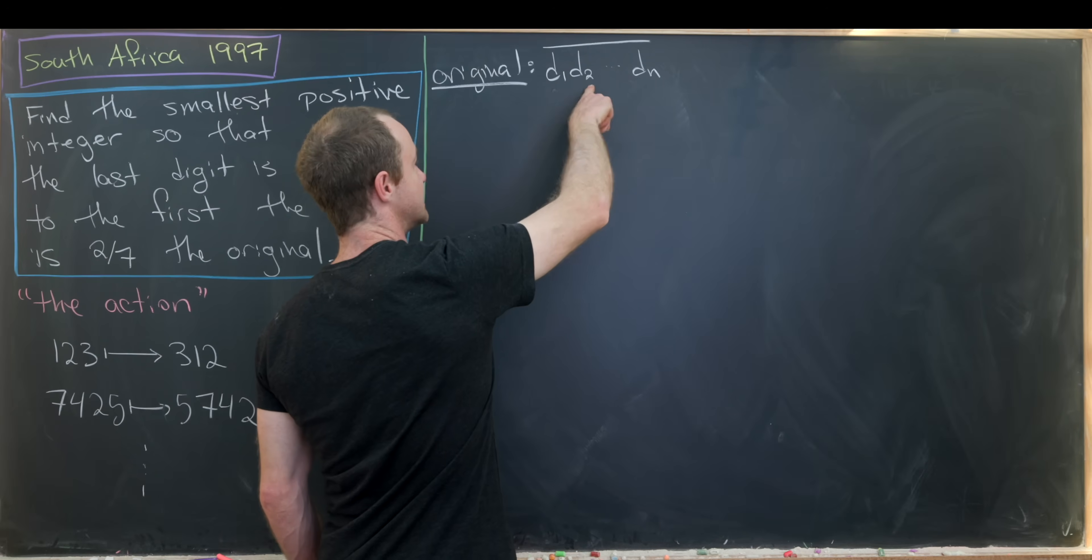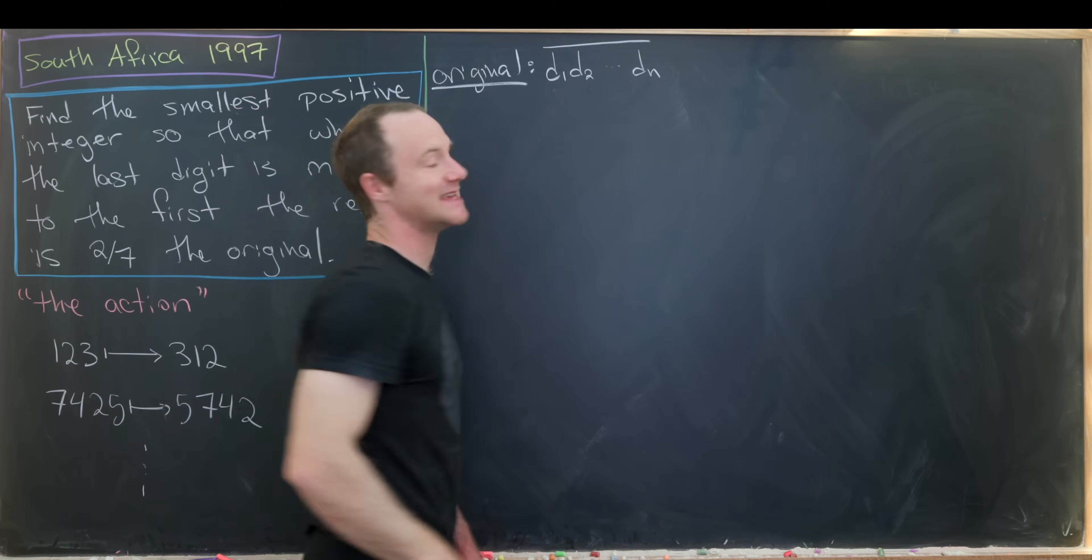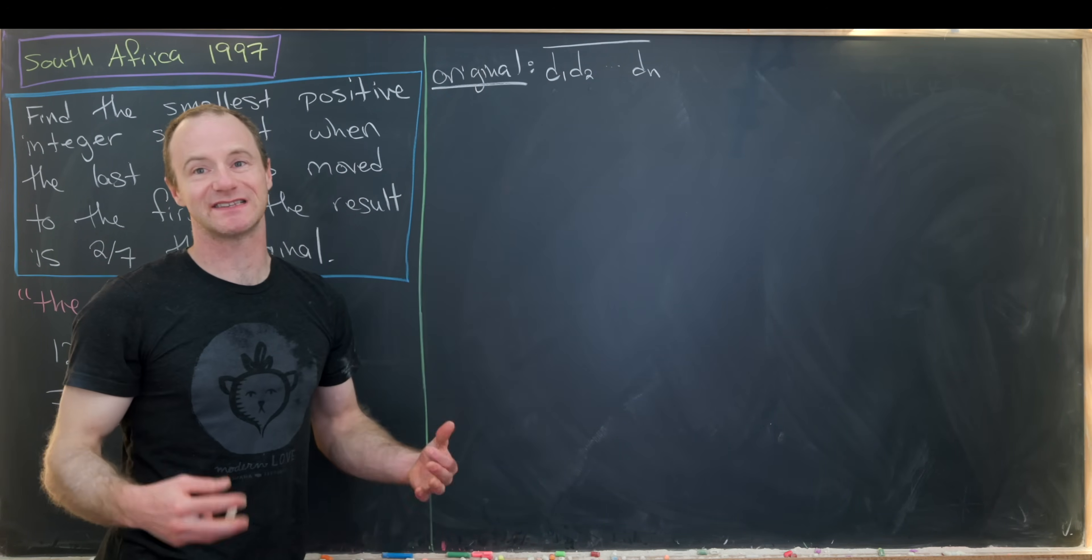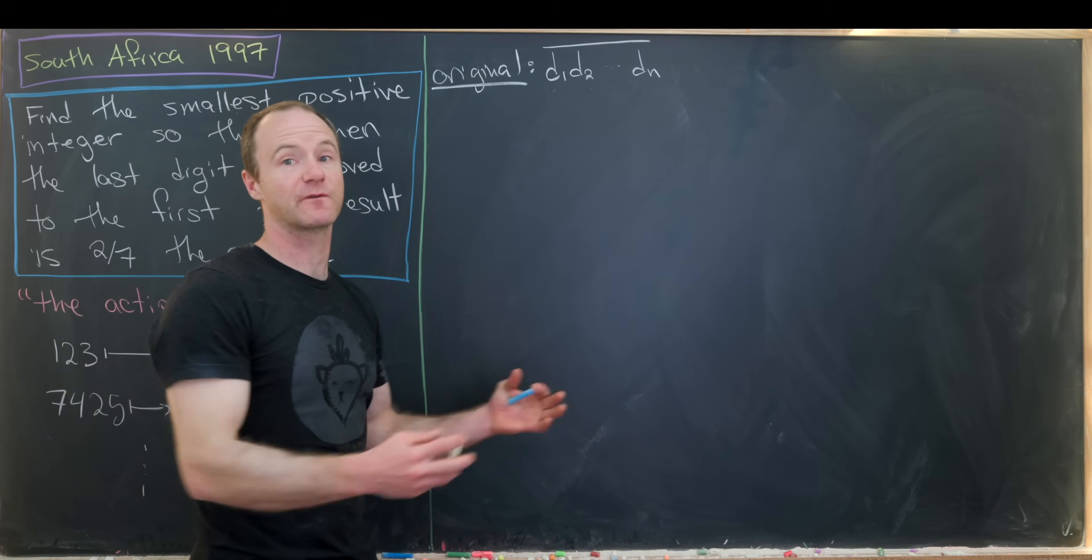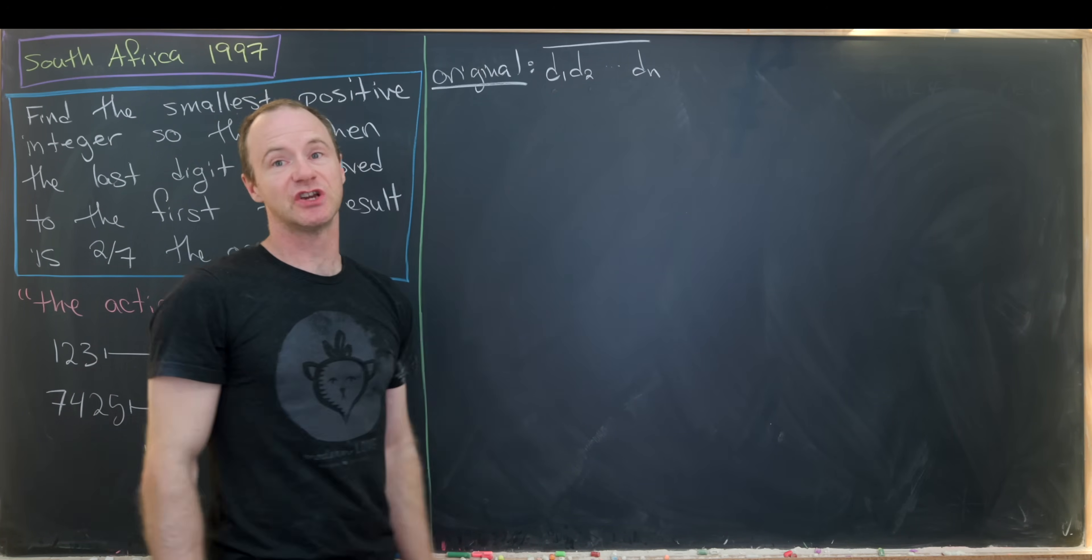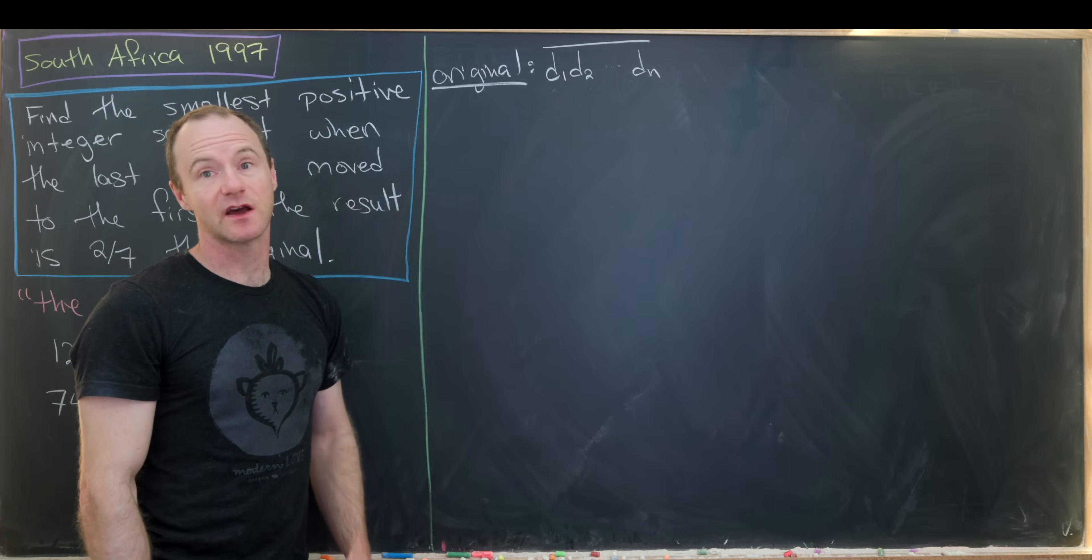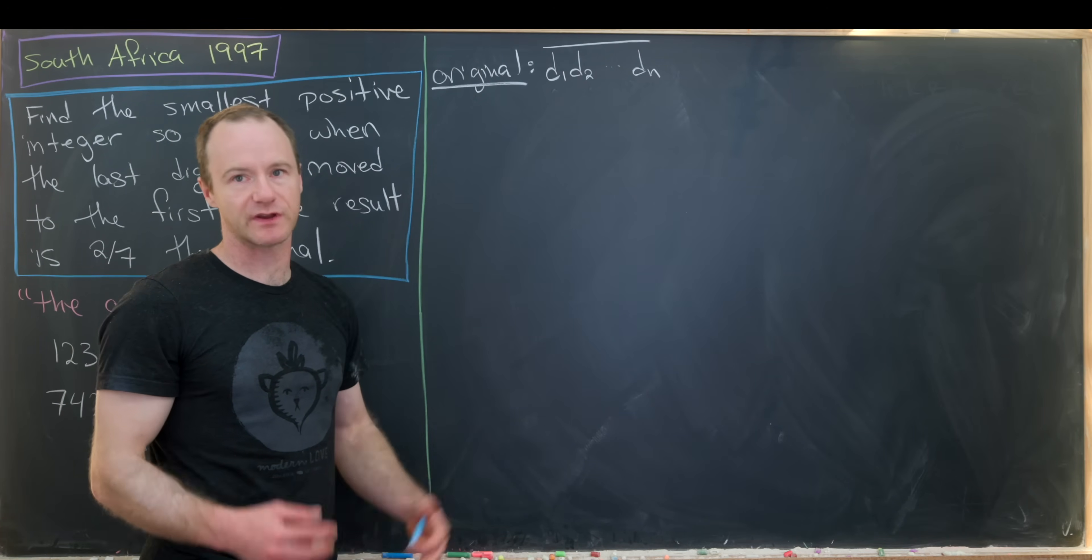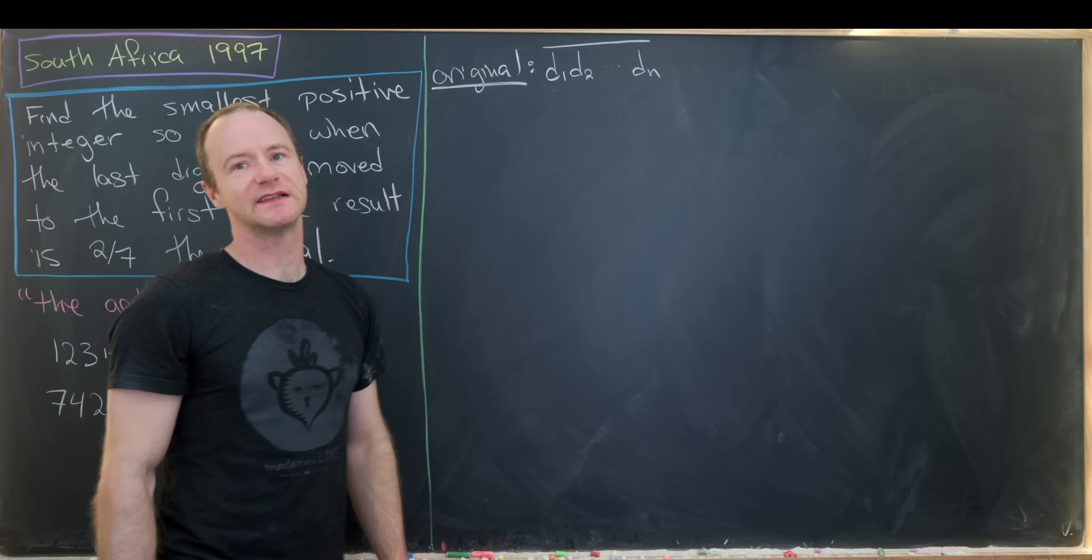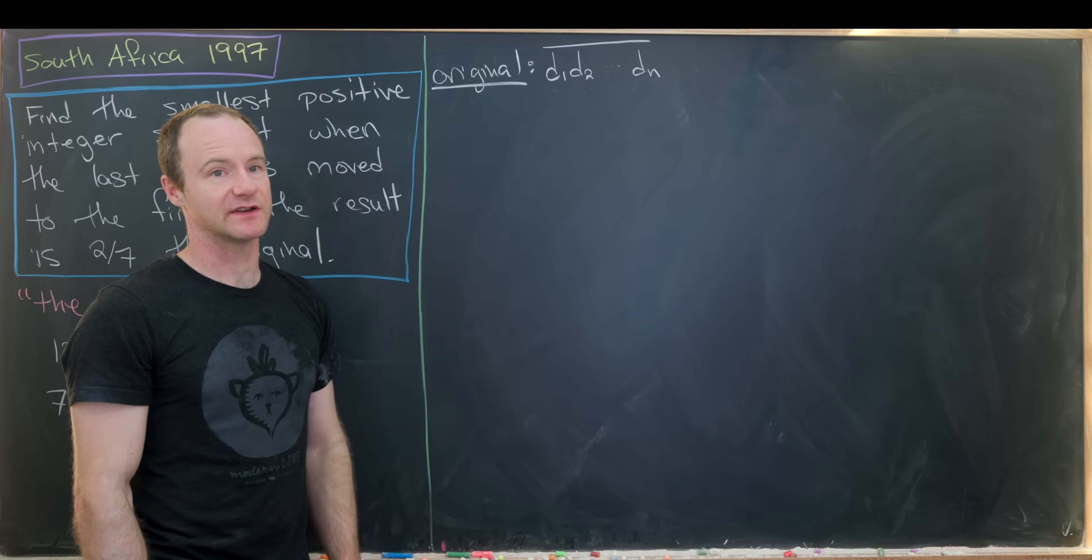So d1 is the first digit, d2 is the second digit, and dn is the nth digit. So putting this bar over it is just a standard way of saying that those are forming the digits for a number. Just so that we're all on the same page, d1 through dn come from the set zero, one, two, three, up to nine. Except for d1, it is not allowed to be zero. That wouldn't be that interesting.